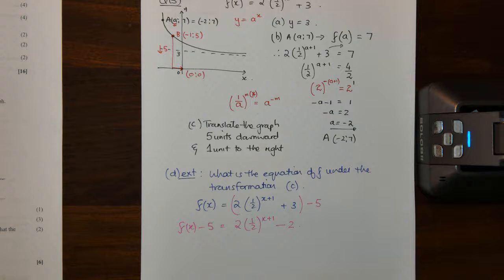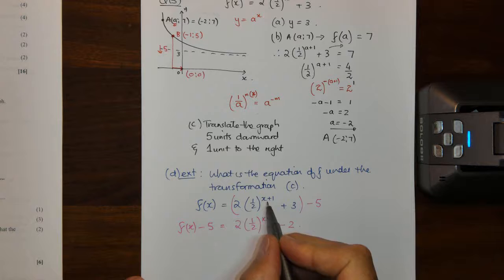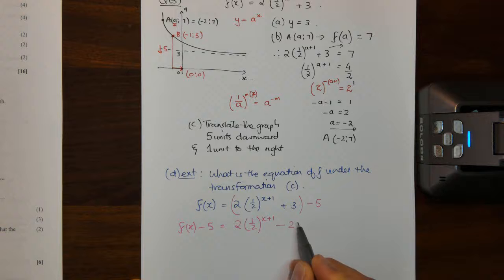But now the important part, if we move this graph one unit to the right, what are we going to do in that equation? I have F of X minus five with a vertical translation, so in the horizontal translation.